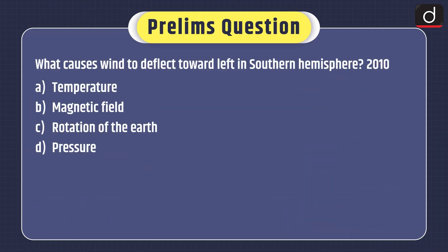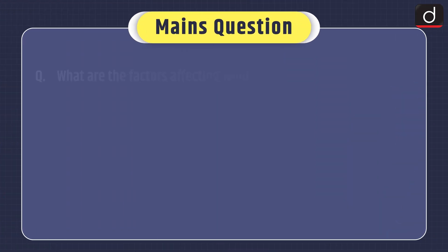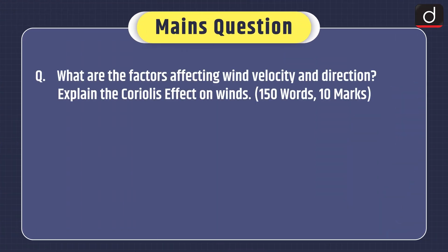Now it's time for the practice question. Prelims question: What causes wind to deflect toward the left in the southern hemisphere? Temperature, magnetic field, rotation of the earth, or pressure? You can send the answer in the comment section. Main question: What are the factors affecting wind velocity and direction? Explain the Coriolis effect on winds. That's all for today — stay tuned for the next episode. Thanks for watching.